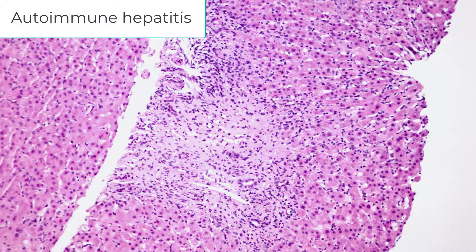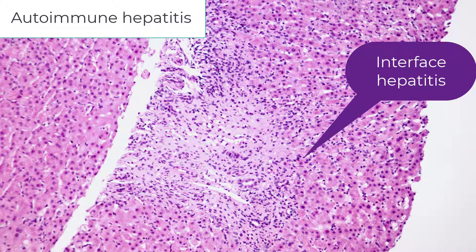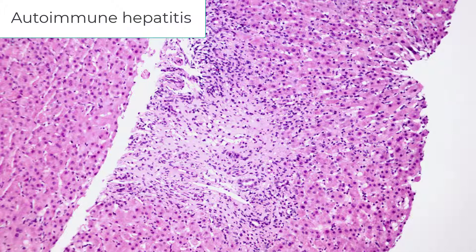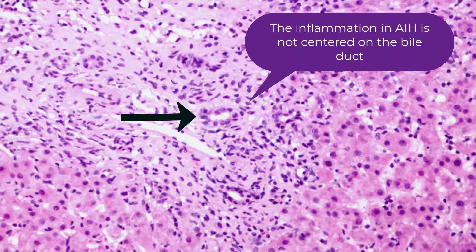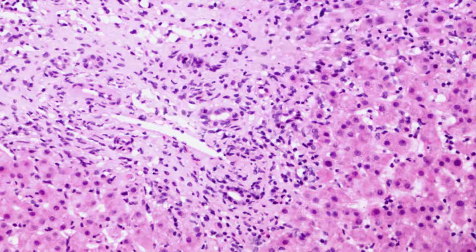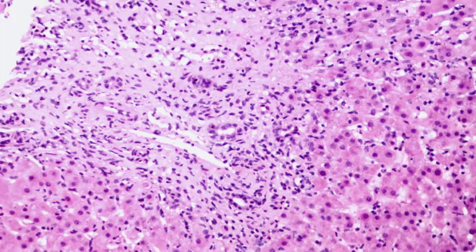This is autoimmune hepatitis. There's interface hepatitis here. You can see plasma cells in PBC, and you can also see interface hepatitis in PBC. The difference lies in the bile duct — notice that bile duct looks a little disheveled, but the inflammation is not centered around the bile duct. If you look at PBC, you will notice that the inflammation is centered largely around the bile duct.